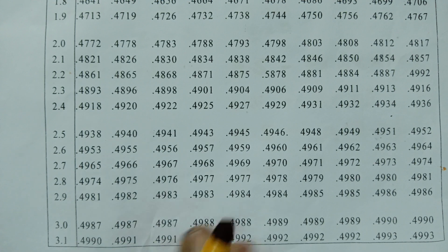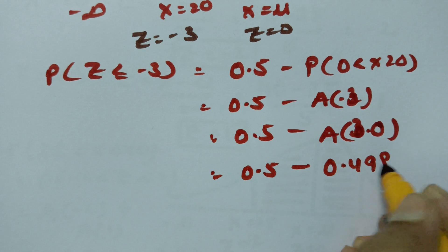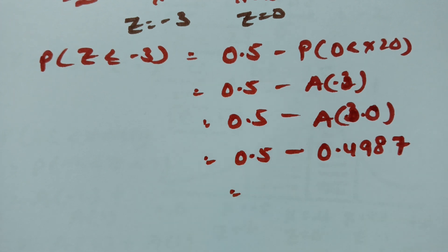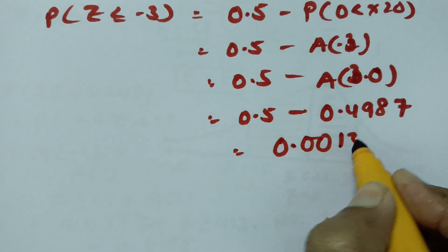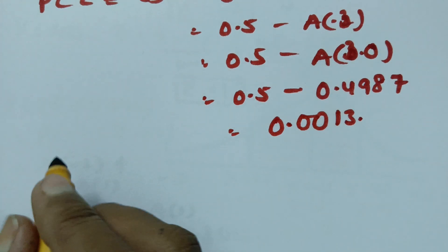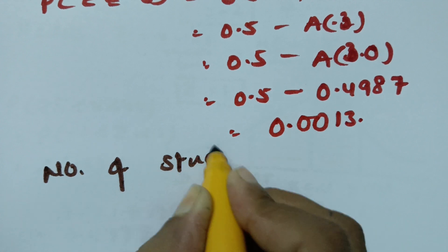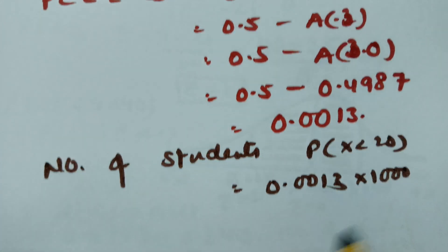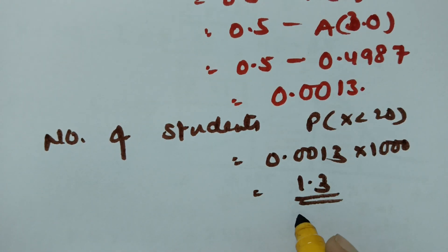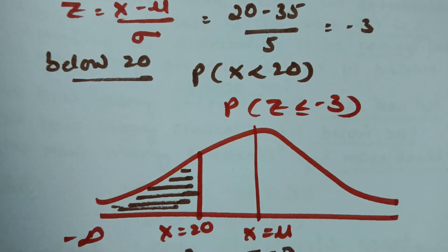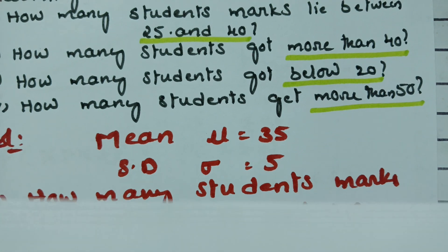The table value for z = 3.0 is 0.4987. So the probability = 0.5 - 0.4987 = 0.0013. Therefore the number of students who got below 20 marks is 1000 × 0.0013 = 1.3, approximately 1 student. This is solution 3.